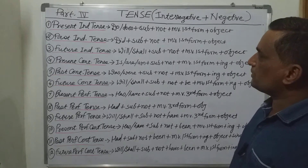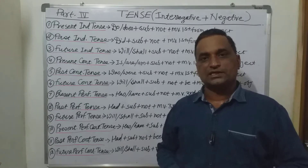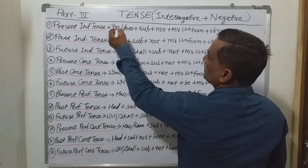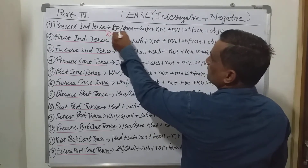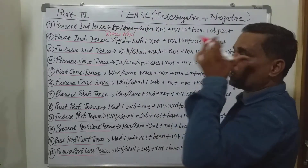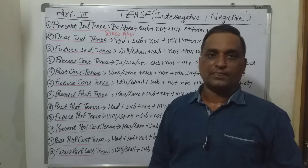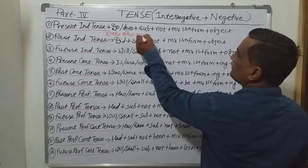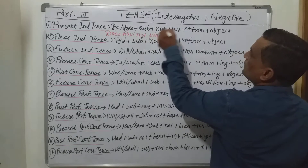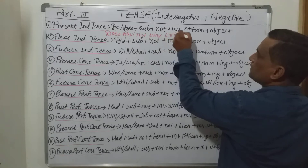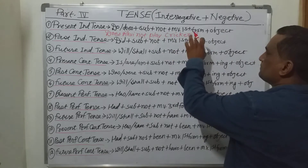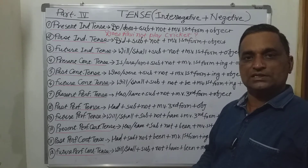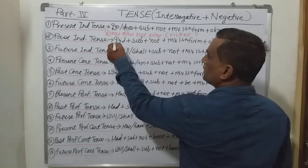First, the present indefinite tense. As you know: 'Ravi plays cricket' is positive, 'Ravi does not play cricket' is negative, 'Does Ravi play cricket?' is interrogative. The interrogative plus negative sentence will be: 'Does Ravi not play cricket?' The formula uses 'does', then subject 'Ravi', then 'not', then the first form of the verb 'play', then the object, and finally a question mark. Don't forget to put the question mark at the end of the sentence.